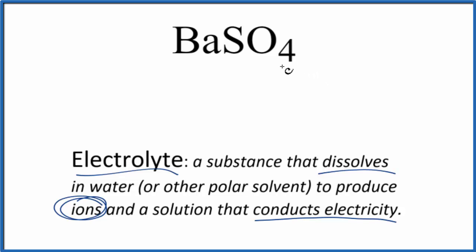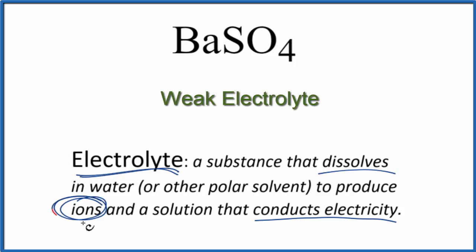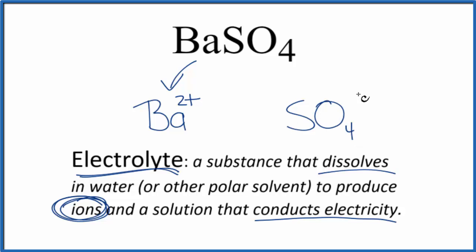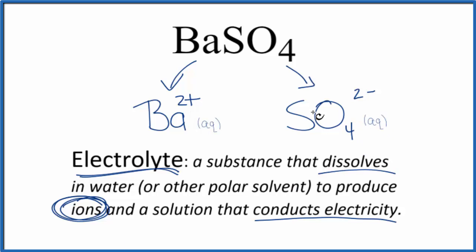When you put it in water, most of it won't dissolve — most all of it stays a solid. Only a little bit will break apart and form ions. So it's an electrolyte because we have some ions, but we don't have many, so it's going to be a weak electrolyte. For the ions, you would have a few barium ions, Ba2+, from group 2 on the periodic table, and a few sulfate ions, SO4 2-. Since those would be dissolved, they'd be aqueous, but you wouldn't have very many since it's an insoluble compound.